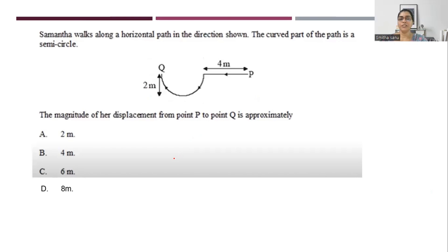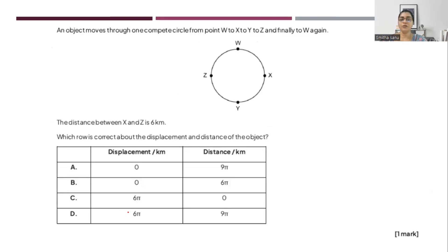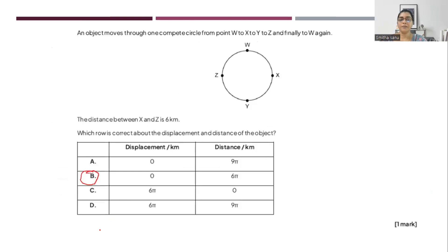Let's see an IBA question. Pause the video and try to solve and look for the correct answer. If you have solved correctly, you should have got the answer as 8 meters. Let's do one more example — pause the video, try to solve, and look for the answer. The correct answer is B.